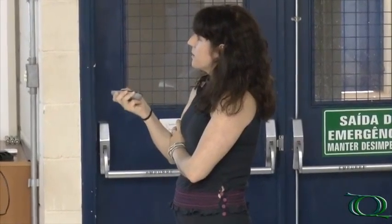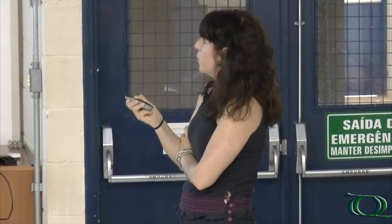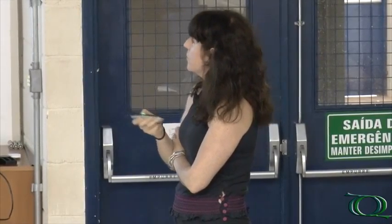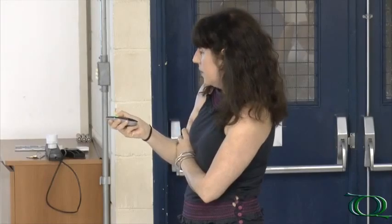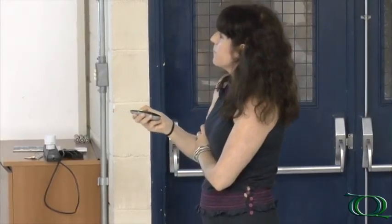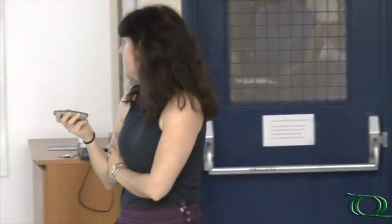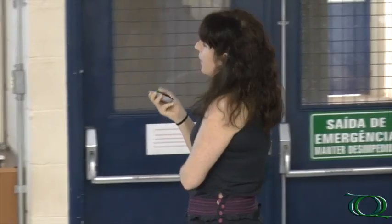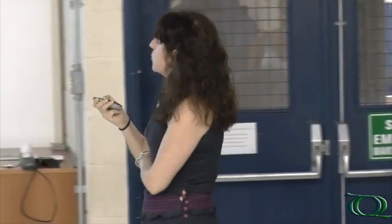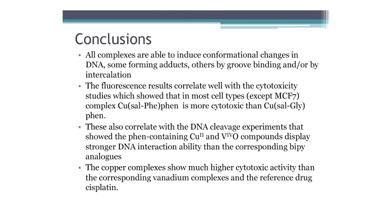If we compare both complexes and the Stern-Volmer constants — which we can calculate at the beginning of the quenching — we can see that the compounds containing phenylalanine have a higher constant than the one with bipyridine. All these complexes were able to induce conformational changes in DNA, with some cases being better than others.